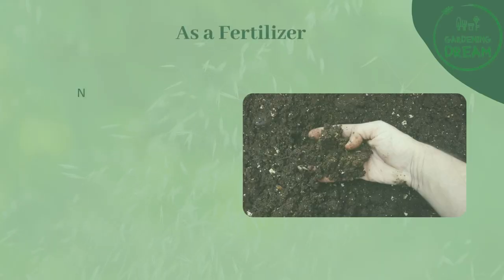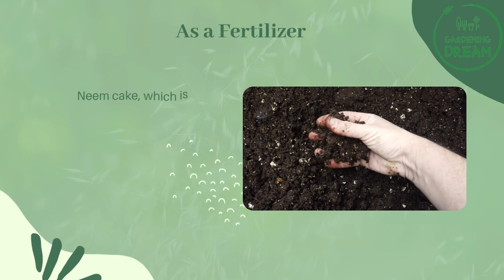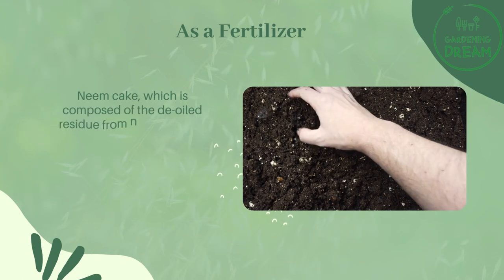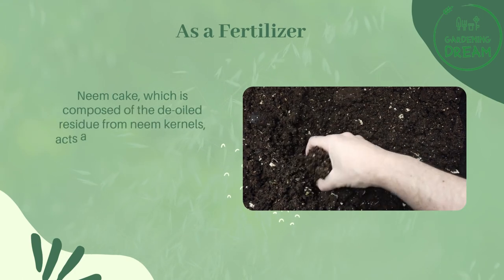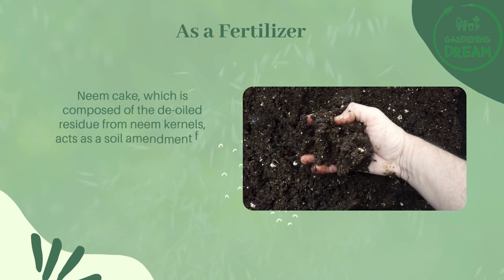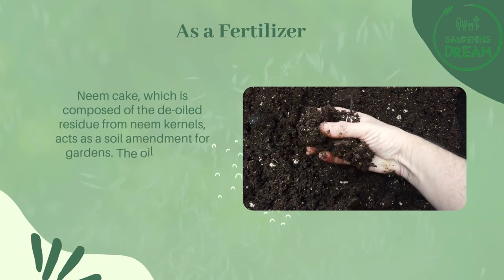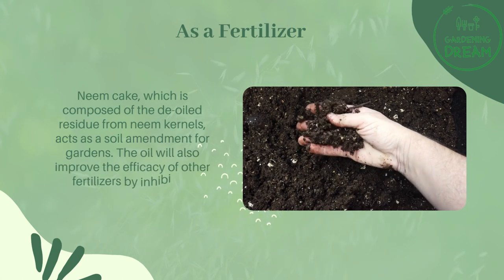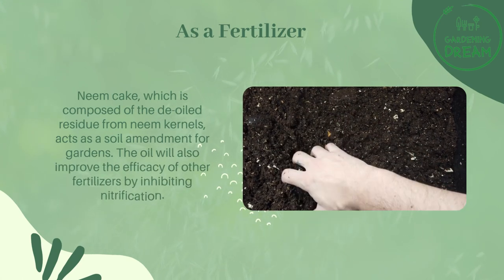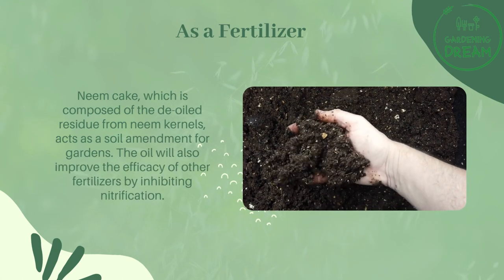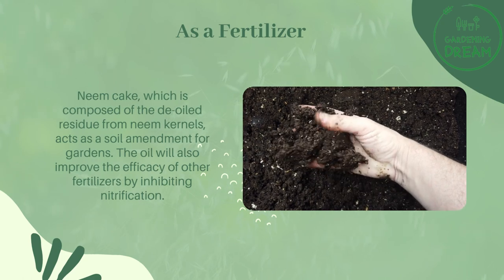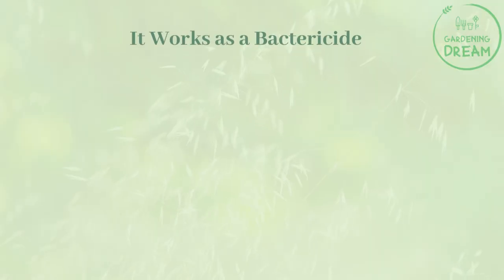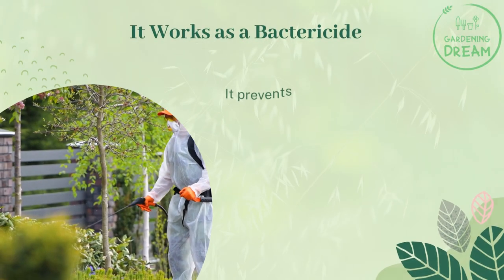As a fertilizer, neem cake — which is composed of the de-oiled residue from neem kernels — acts as a soil amendment for gardens. The oil will also improve the efficacy of other fertilizers by inhibiting nitrification.